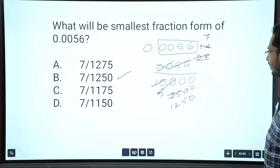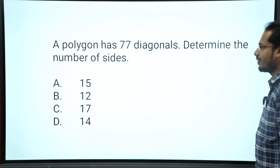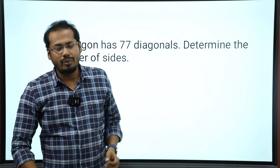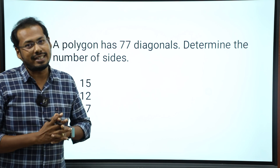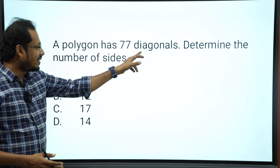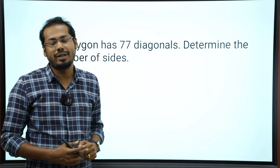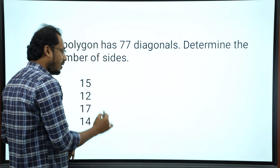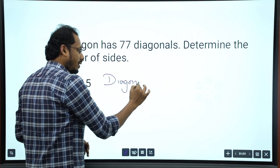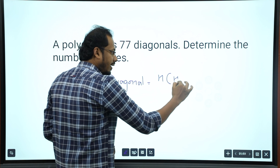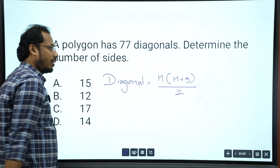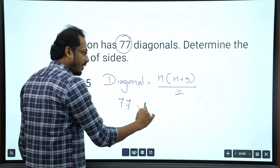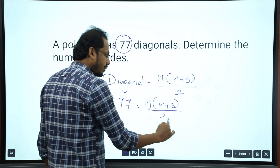Next question: a polygon has 77 diagonals — determine the number of sides. We have a formula for this. The formula for the number of diagonals in a polygon is: diagonals equals n(n minus 3) divided by 2. Wait — actually the formula is n(n plus 3) divided by 2. So write: 77 equals n(n plus 3) divided by 2, which means 154 equals n(n plus 3).